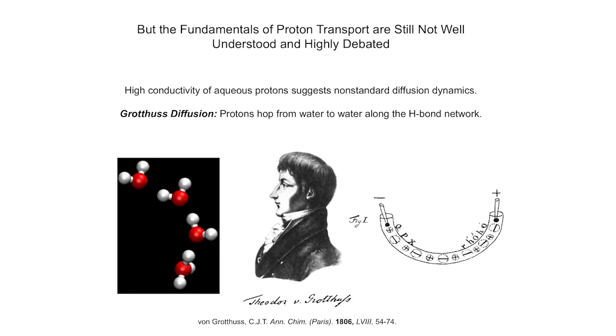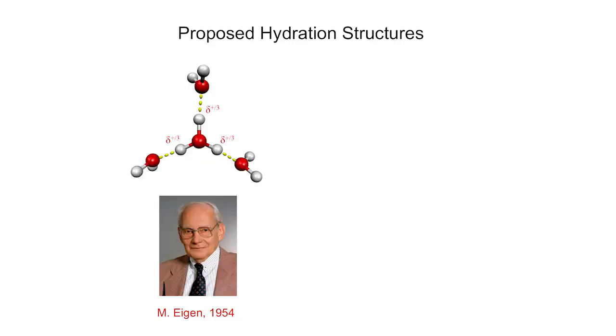The high mobility of protons in water suggests a unique mechanism for its transport, and in 1806, Theodor von Grotthuss proposed a hopping mechanism whereby electrical charges can hop from water molecule to water molecule along a water wire. This is quite astounding, given that the existence of atoms and molecules wasn't even known for another hundred years.